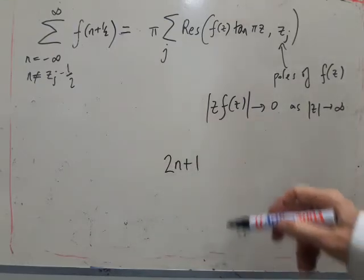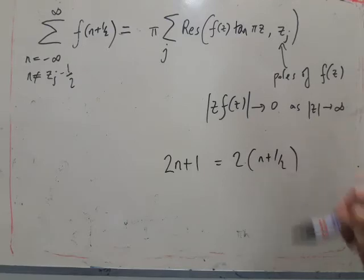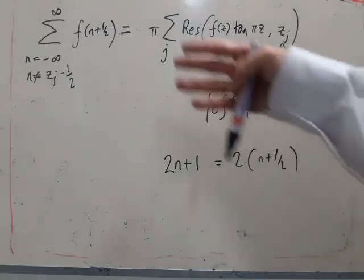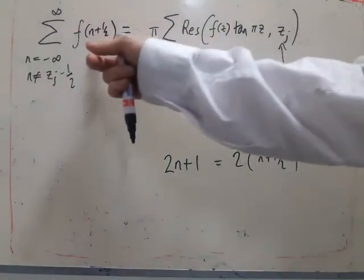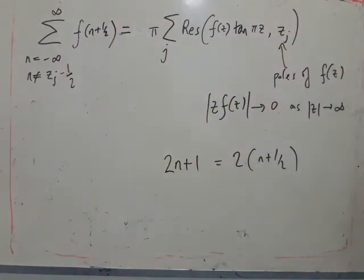of course, as 2n plus 1, which you can also write as something times n plus a half. So if you only see odd numbers in the formula you're trying to evaluate the sum of, then this is actually a quicker formula to use.